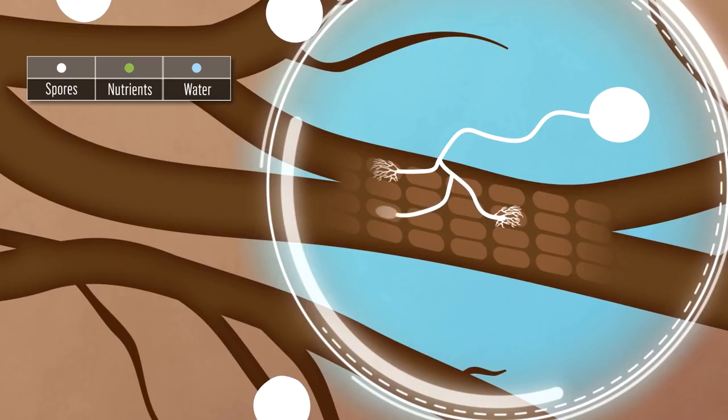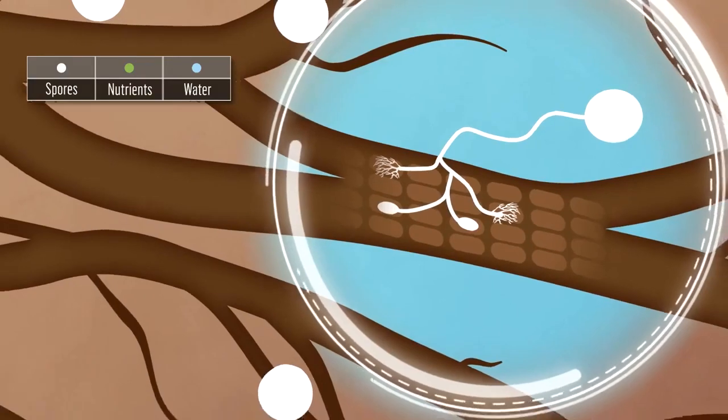The fungi penetrate the root and create an internal network of fungal structures where the plant and mycorrhizae exchange sugars and nutrients.